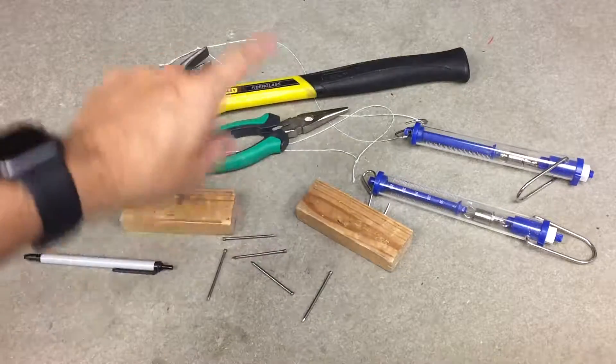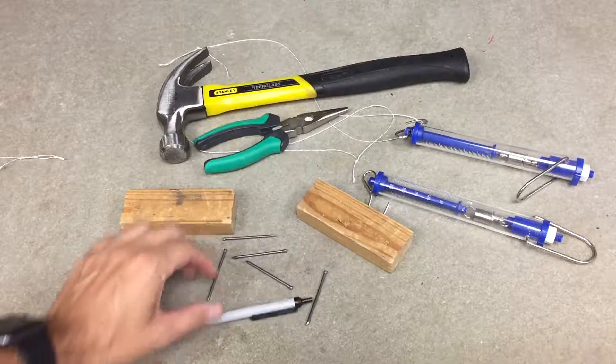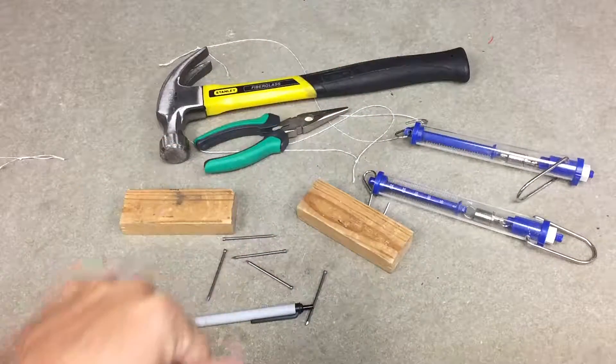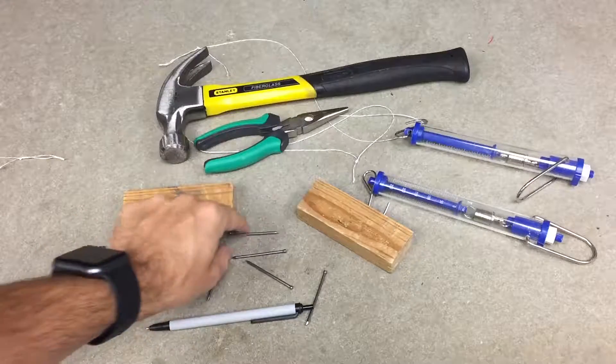Okay, we're gonna make a pulley system. So I'm gonna use these blocks, a pen, and some other stuff here. This part's a little bit boring, so let's just do it. I'm gonna take these nails.